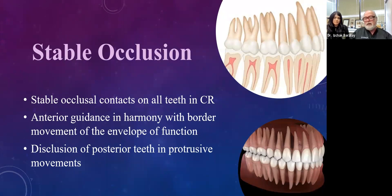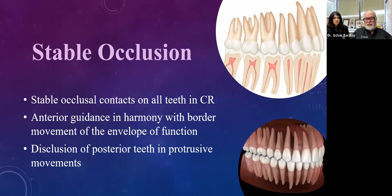What I'd like to briefly talk about first is stable occlusion, because we're going to talk a lot about occlusion today — the effects of occlusal forces on restorations and how to use bite force knowledge to help choose restorations. Stable occlusion involves stable occlusal contacts on all teeth in a centric relation position, anterior guidance in harmony with the border movements of the envelope of function, and disclusion of posterior teeth on protrusive movement.